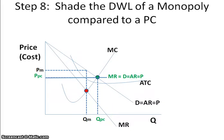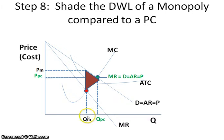Step 8: Shade the deadweight loss of a monopoly compared to a perfectly competitive firm. Deadweight loss is the loss of consumer and producer surplus because you are no longer producing at the allocatively efficient point. A perfectly competitive firm is always allocatively efficient and does not have deadweight loss. The monopoly has a lower quantity, and the distance between the monopoly quantity and the perfectly competitive quantity creates this triangle representing the loss of consumer surplus and producer surplus.